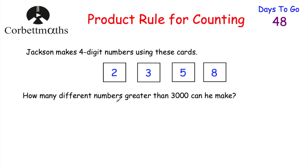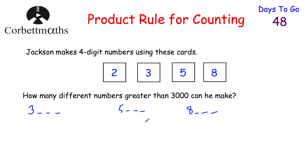Our last question: Jackson makes four-digit numbers using the digits 2, 3, 5, and 8. How many different numbers greater than 3,000 can he make? One approach is to start by considering the first digit. Since the number must be greater than 3,000, the first digit can't be 2 — it can be 3, 5, or 8. So I'll consider the numbers in the 3,000s, then the 5,000s, then the 8,000s, and add them together.